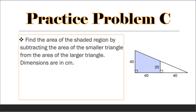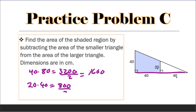And we have one more problem. Find the area of the shaded region by subtracting the area of the smaller triangle from the area of the larger triangle. The dimensions are in centimeters. So let's find the area of the big triangle. So this is 40 times 80, because this bottom is 80. So 40 times 80 gives us 3,200, divided by 2 gives us 1,600. That's the area of the big triangle. The area of the small triangle, which would be 20 times 40, gives us 800, divided by 2 gives us an answer of 400. So I take my 1,600 minus my 400, and now I get 1,200 square centimeters.